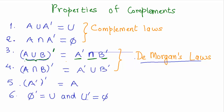So instead of doing A union B and then taking its complement, if you take the complement of A and the complement of B and find the common elements between those complements, you get the same result. The same rule applies for intersection: the complement of A intersection B is the same as the union of A complement and B complement.